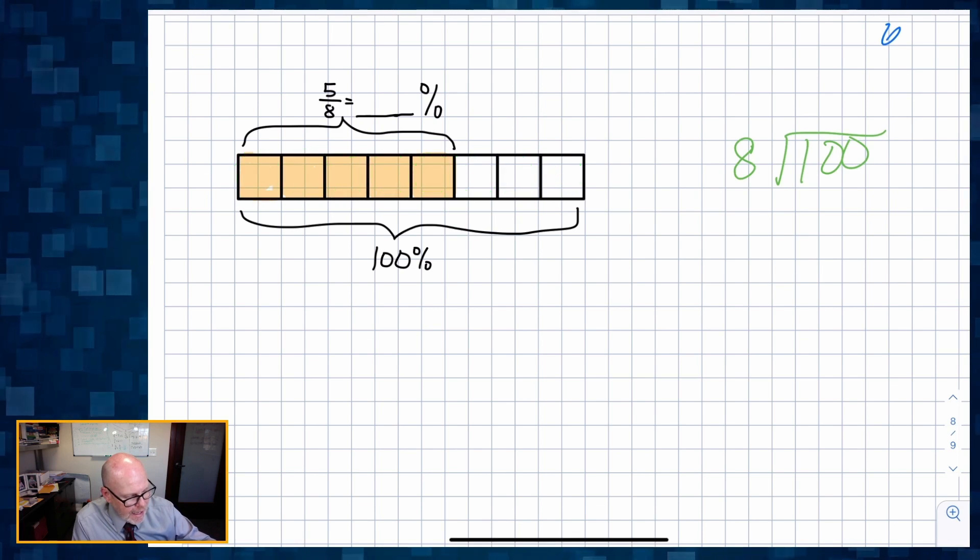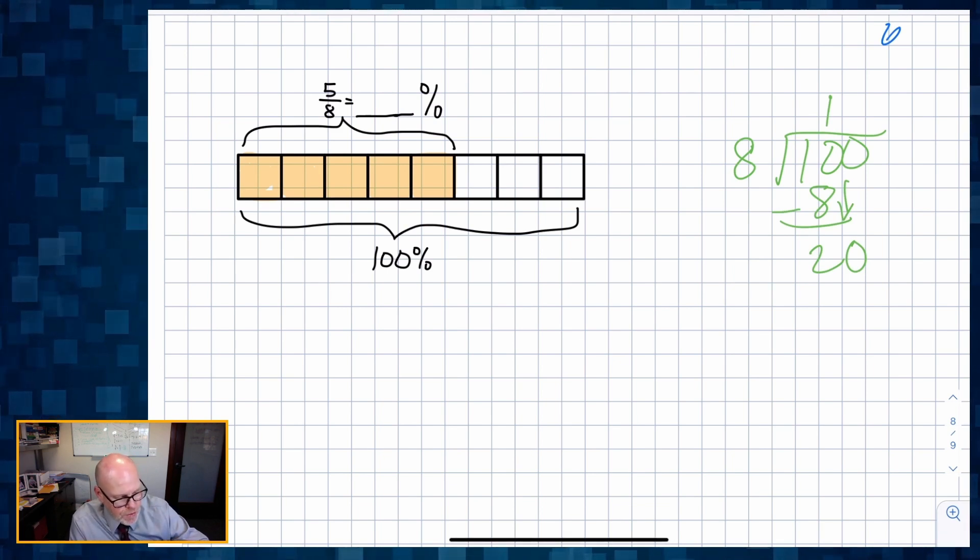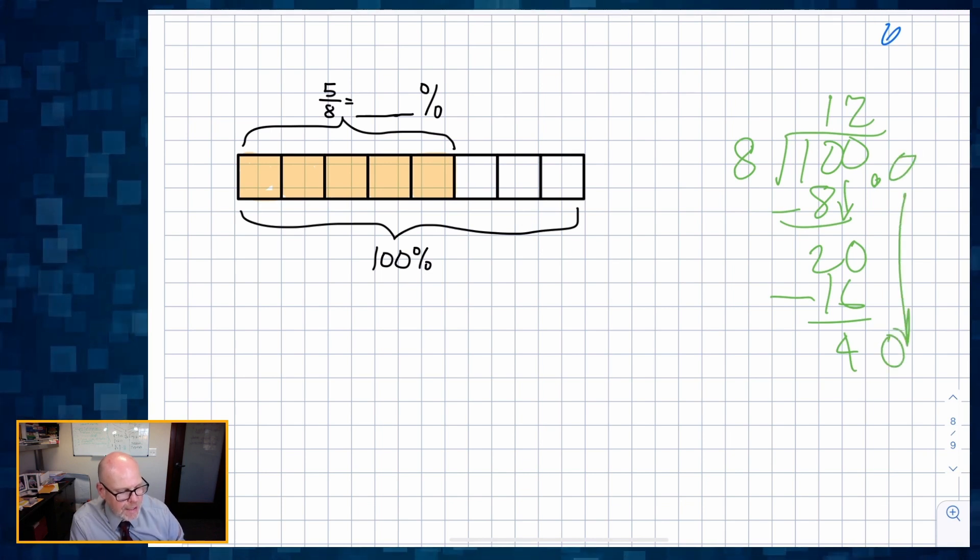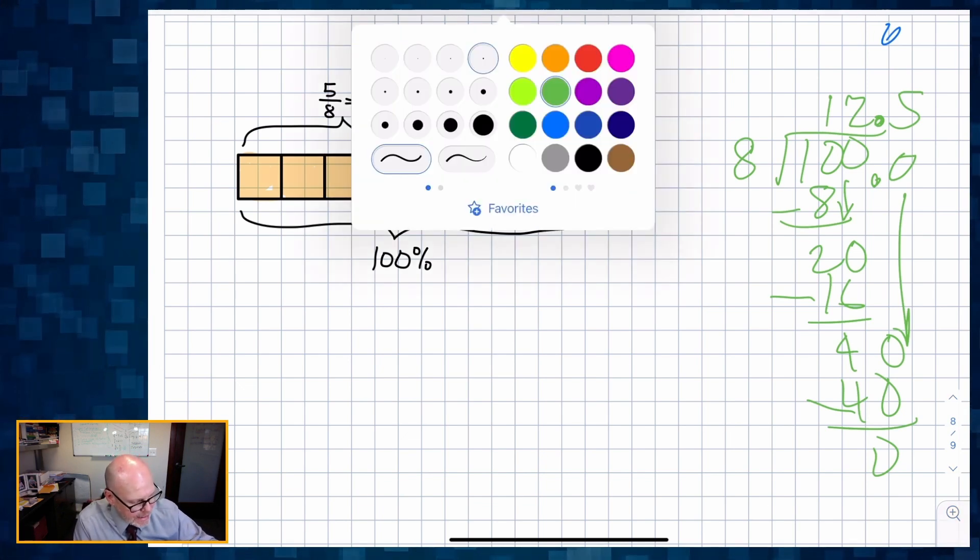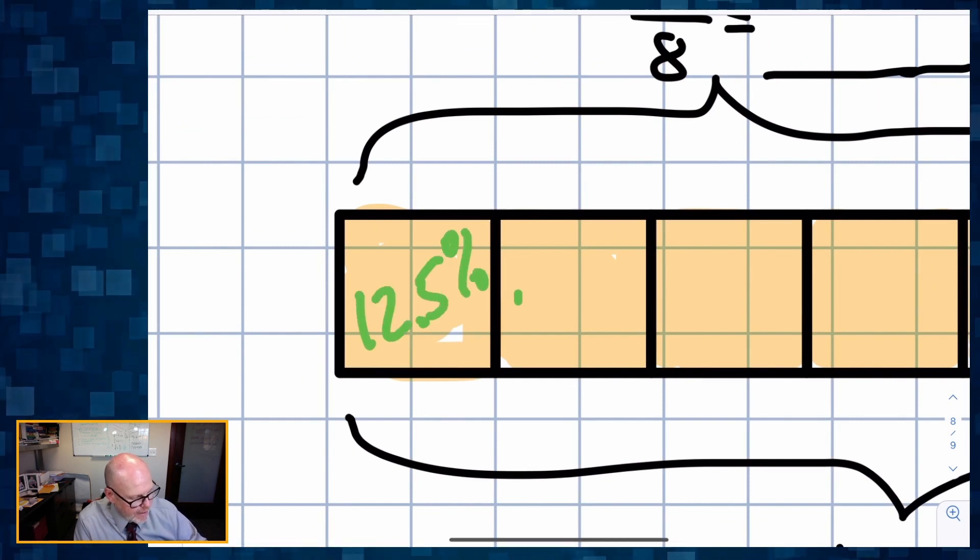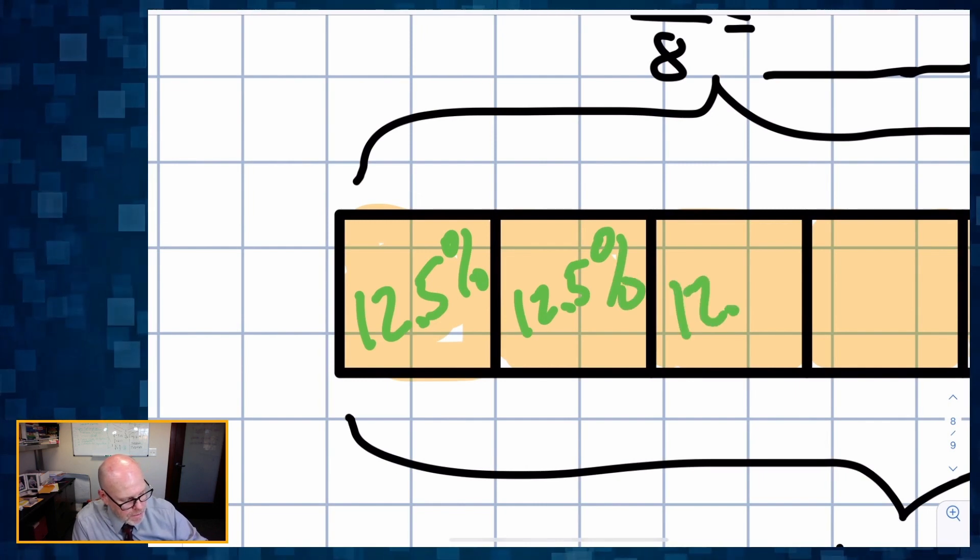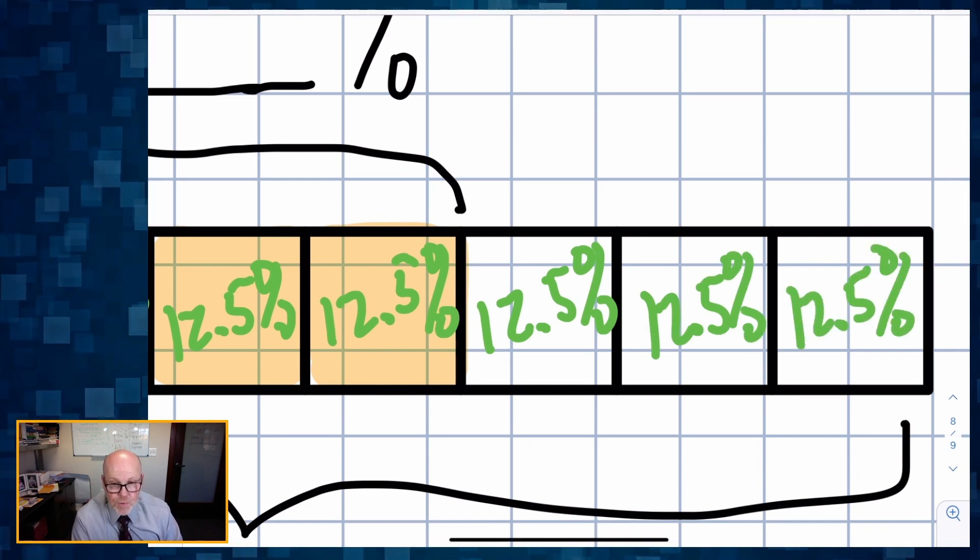So if I divide 100 divided by eight, I'm going to drop that zero. Eight goes into 20 two times, that's 16 with four left over. I'm going to add a decimal, drop the zero. Eight goes into 40 five times. So I get 12 and a half. What does that 12 and a half mean? Well, that 12 and a half means that each piece represents 12 and a half percent.